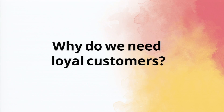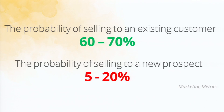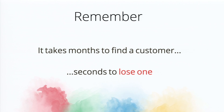We talked about the levels of loyalty, but why do we need them? It's pretty self-explanatory, but there's actual data behind it. Look at the disparity: 60 to 70% is a lot different than 5 to 20%. This is the difference between being successful and struggling. It's a lot easier to sell to existing loyal customers. There's also a great quote in the customer loyalty space: 'It takes months to find one, but seconds to lose one.'